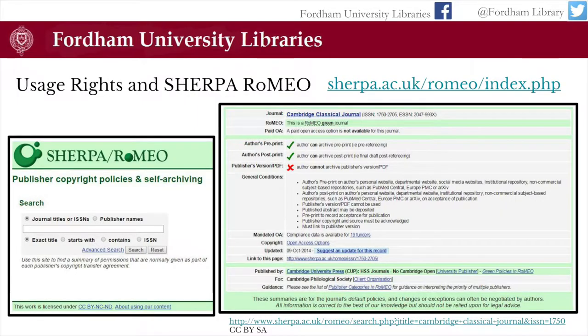A lot of faculty wonder: can I actually use the repository? Is the journal I publish in going to allow it? Am I violating copyright by putting my article in the repository? That depends on the journal in which you publish, and the best tool to find out is a website called Sherpa Romeo. It's very easy to use — just put in the title of the journal and press search. On the right side of the screen it will tell you exactly what permissions you have: whether you can archive the published version, preprints, or neither. So if you're considering using the repository, always check whether it's okay first.